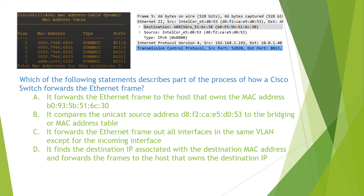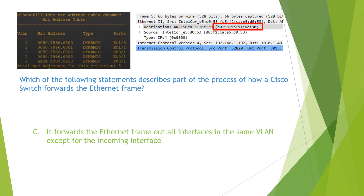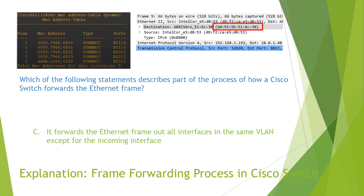The question reads: which of the following statements describes part of the process of how a Cisco switch forwards an Ethernet frame? A Cisco switch uses the destination MAC address to forward the frame, but in this case the destination MAC address does not exist in the MAC address table. So this frame is considered an unknown unicast frame; therefore the switch will forward the Ethernet frame out of all interfaces in the same VLAN except the incoming interface. The answer is C. You can find the detailed explanation in the video 'Frame Forwarding Process in Cisco Switch.'